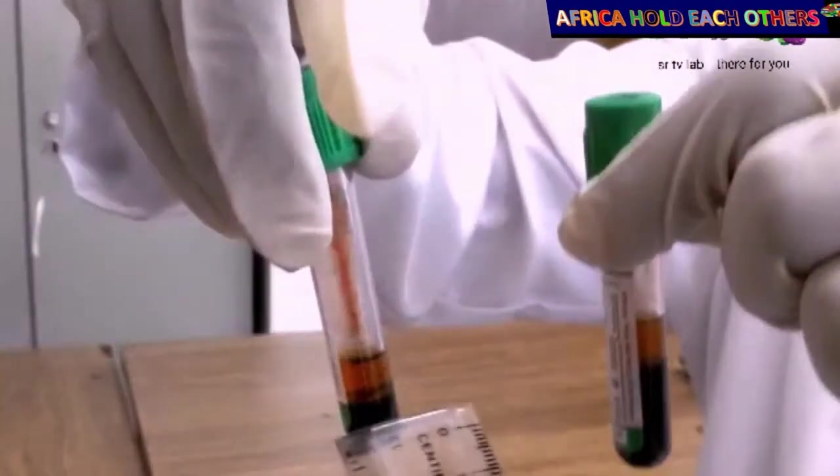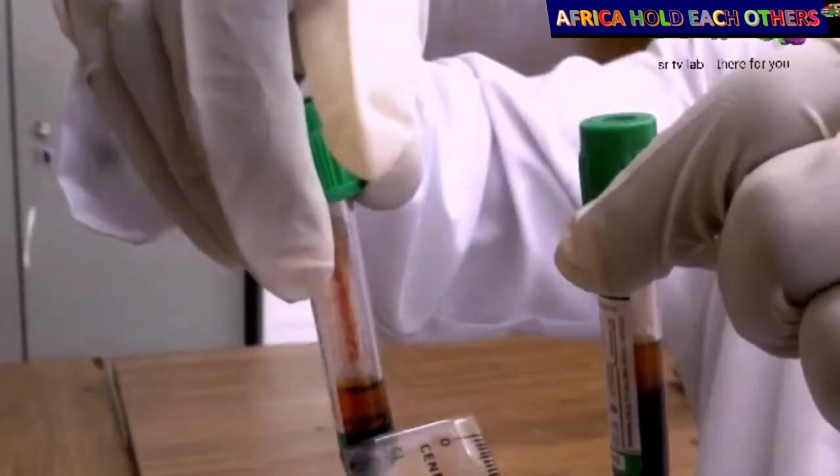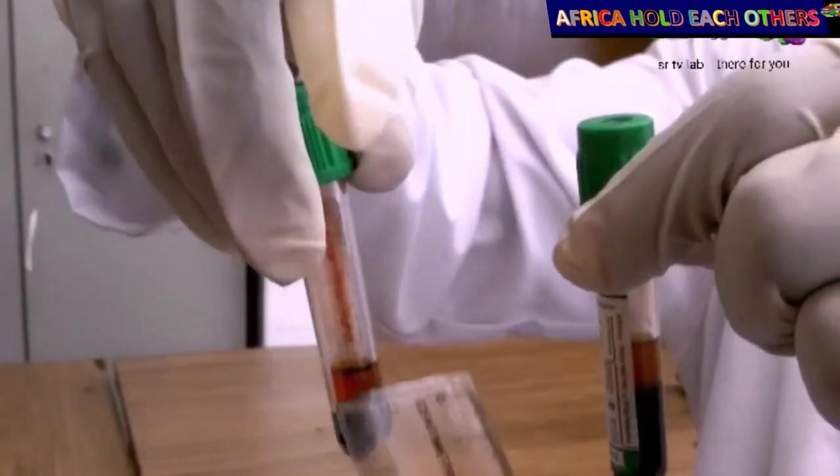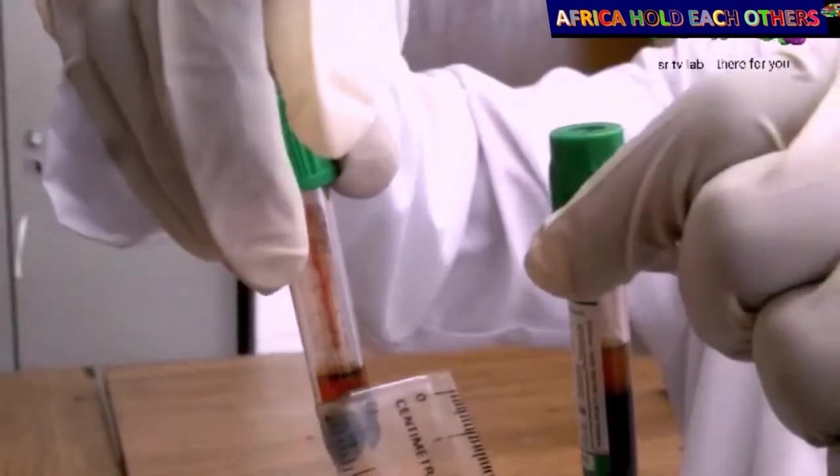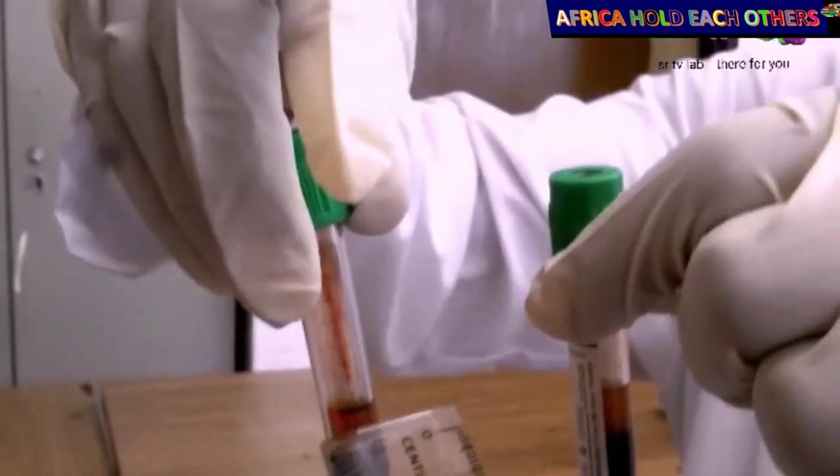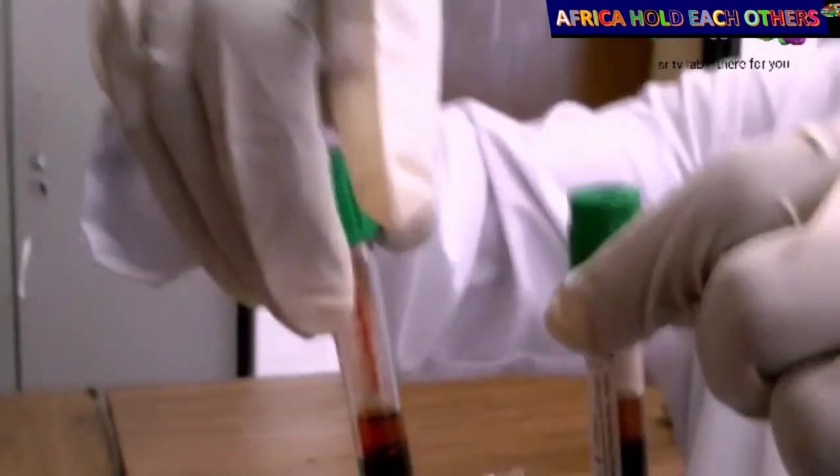Even in the other tube, the down part is concentrated red blood cells. The upper part is plasma. This is how the normal blood looks like.